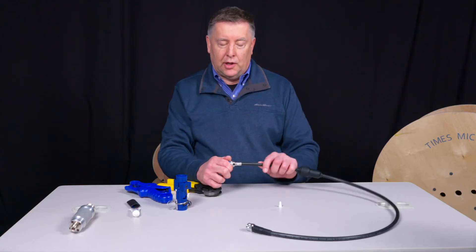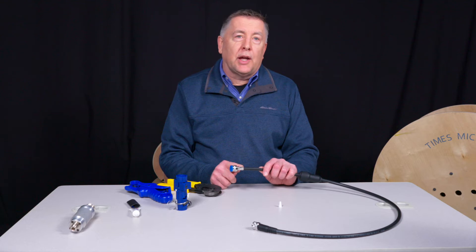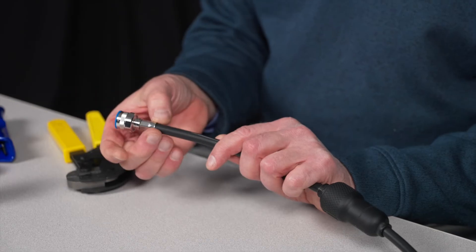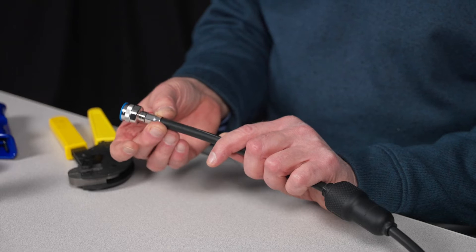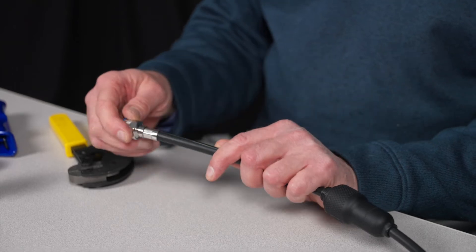And you want to crimp it just once right at the very back of the connector, like so. And this is what it looks like. You don't want to move that tool back and crimp that again. If you do that, you're going to crush the jacket, change the impedance, change the electrical performance of the interconnect. So you crimp it just once.